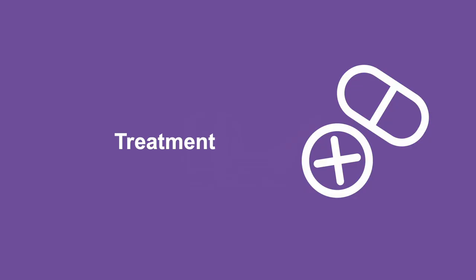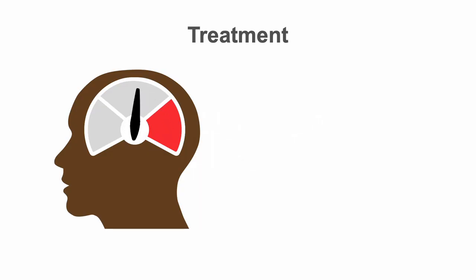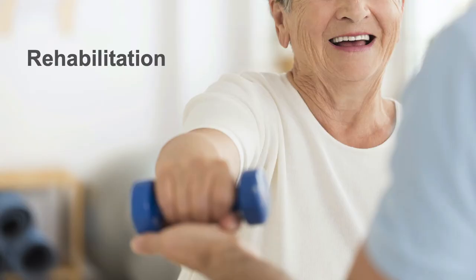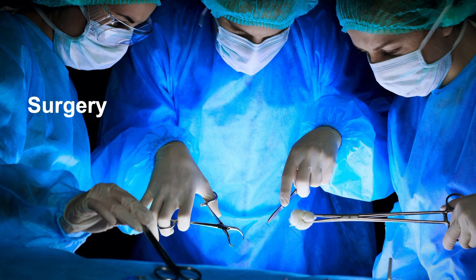Treatment of hemorrhagic strokes more often than not is supportive. Efforts are made to control intracranial pressure, reduce brain swelling, and keep the rest of the patient's body healthy as the hemorrhage resolves. Once it's clear the patient will be stable, attention is rapidly turned to their rehabilitation. Only a select few patients with hemorrhagic strokes go on to surgical intervention, as surgery has only been shown to be beneficial in a narrow window of associated circumstances.